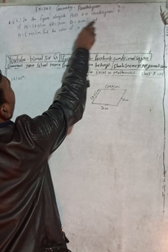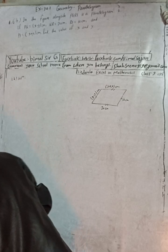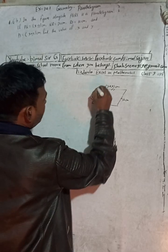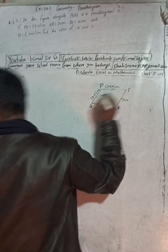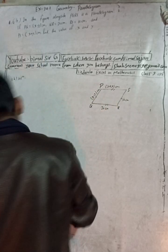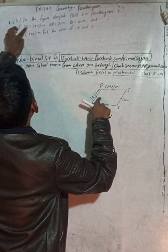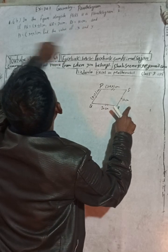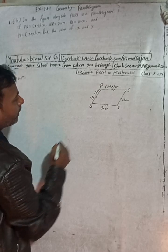This is question number 6B. In the figure alongside, PQRS is a parallelogram. If PQ is equal to x minus y cm, QR is equal to 20 cm, RS is 10 cm, and PS is x plus y cm. Find the value of x and y.